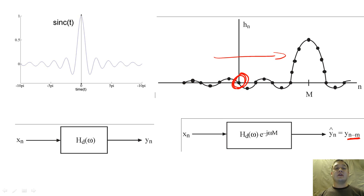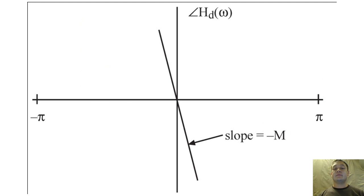This uniform delay is caused by the phase of the filter. To obtain a uniform delay of M samples, the filter must have a linear phase with a negative slope of M.